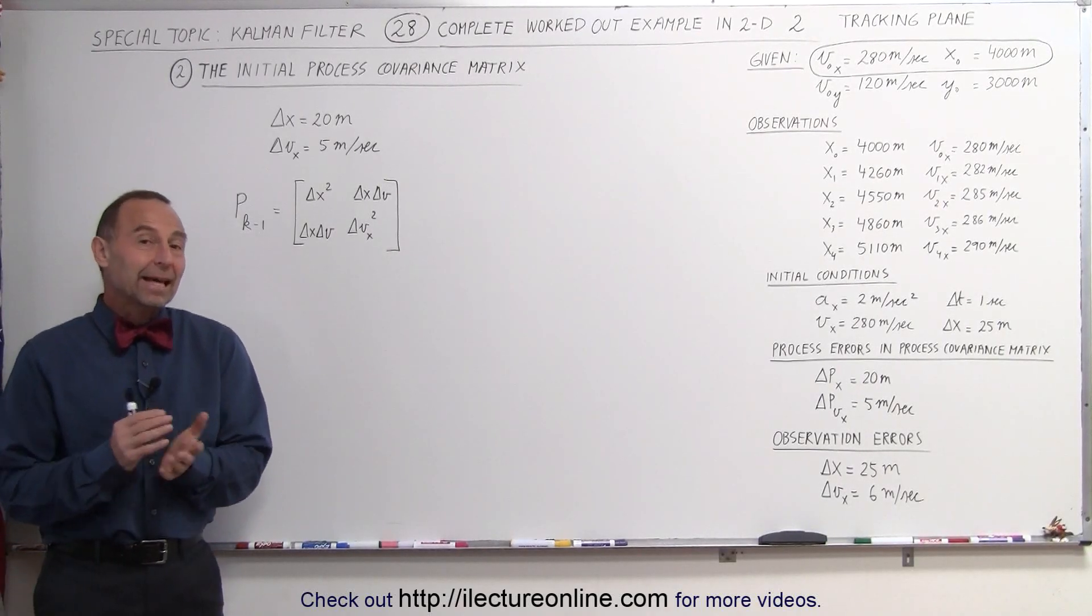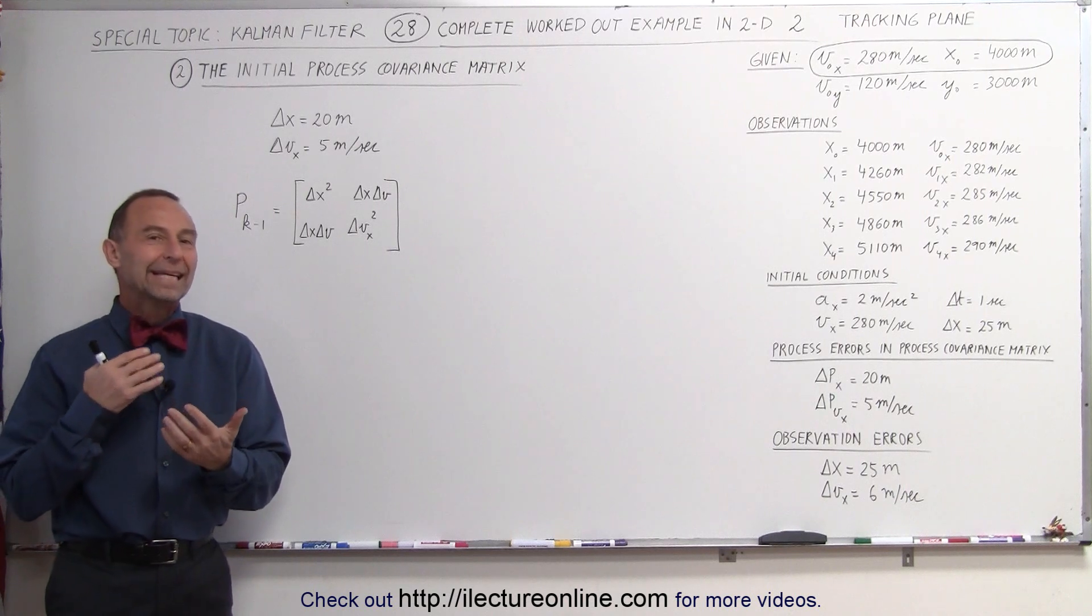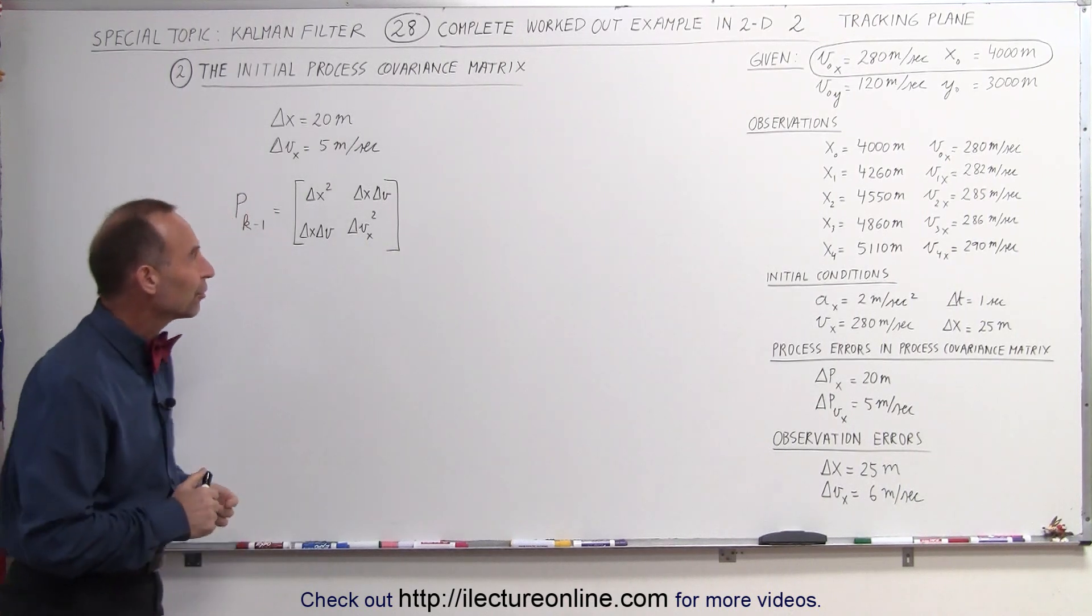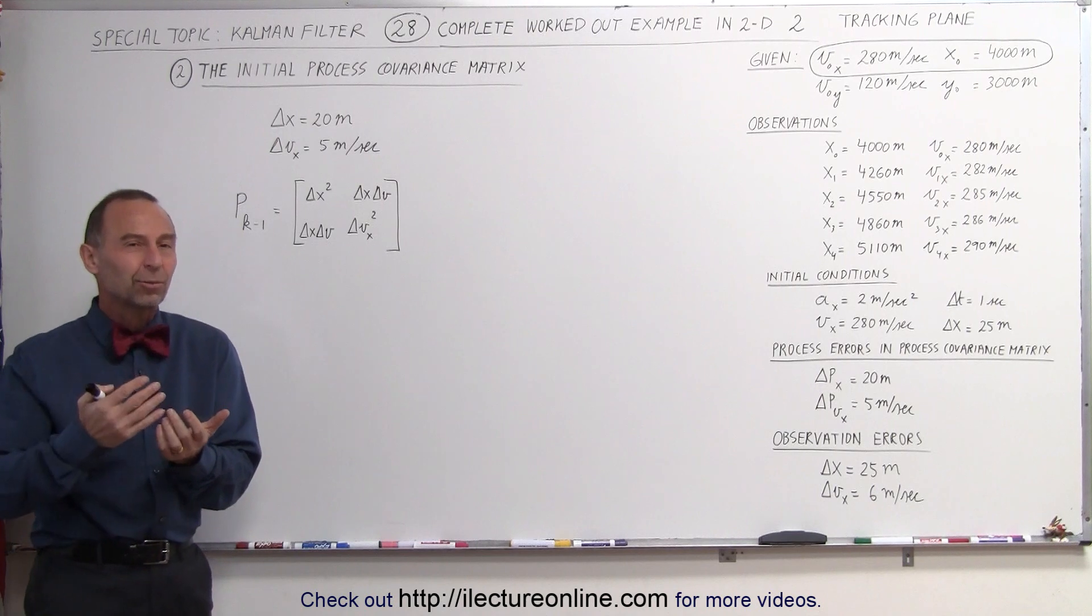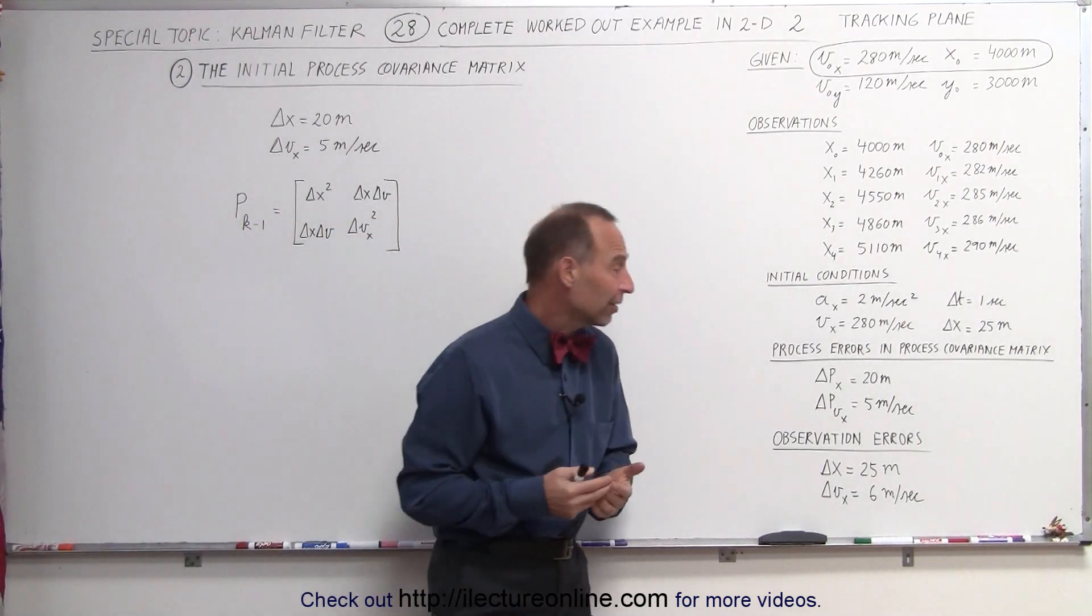Welcome to ElectronLine. The next step is a step you only need to do once: come up with the initial process covariance matrix. What we realize is that in the process, we're going to have some errors in the calculation of the position and velocity.